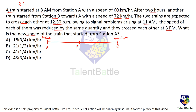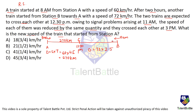Draw a diagram: station A and station B, with the trains moving towards each other. The first train travels from 8 AM to 12:30 PM — that is 4.5 hours at 60 km/h — covering 270 km. The second train travels from 10 AM to 12:30 PM — 2.5 hours at 72 km/h — covering 180 km.